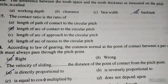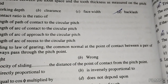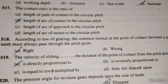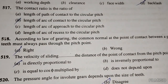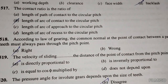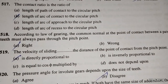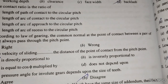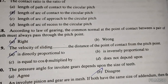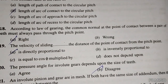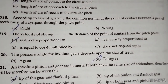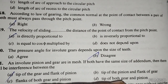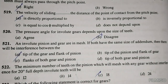According to the law of gearing, the common normal at the point of contact between a pair of teeth must always pass through the pitch point. The velocity of sliding at a distance from the point of contact is directly proportional to that distance from the pitch point. The pressure angle of involute gears does not depend upon the size of teeth.